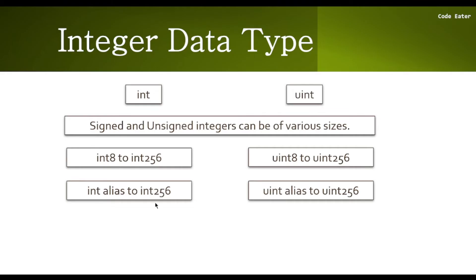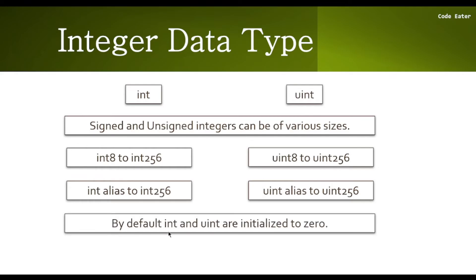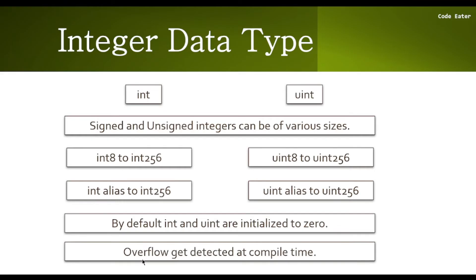By default, int and uint are initialized to 0. So if you declare any variable of either int type or uint type and you do not initialize it, by default that variable will hold 0 as its default value, because in Solidity we do not have any concept of none.